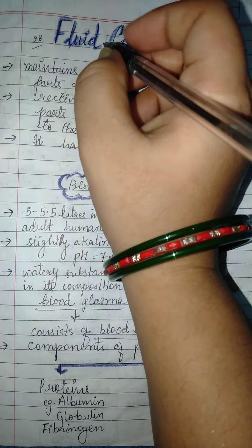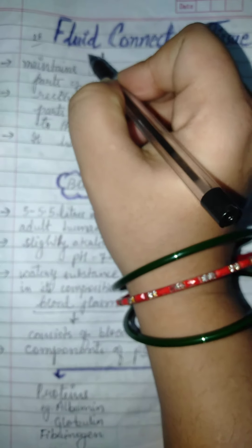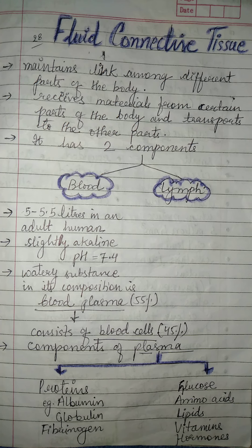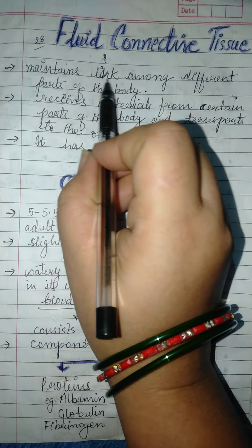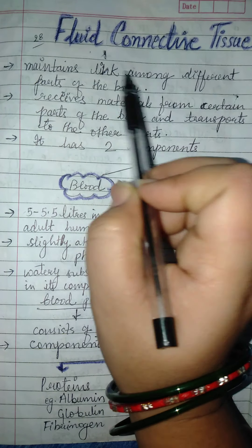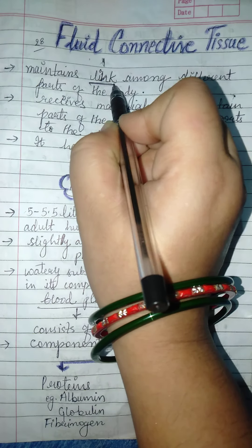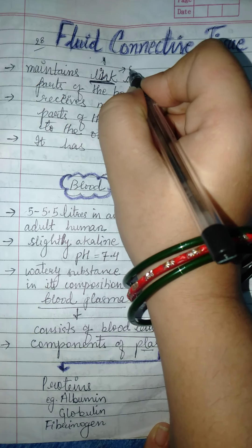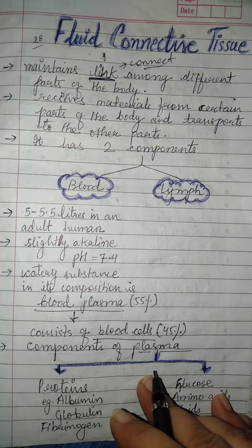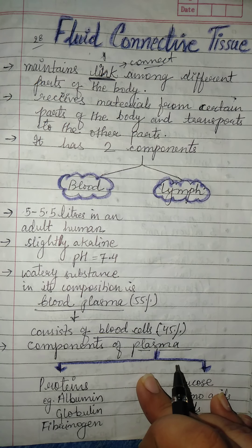If the connective tissue is in the form of liquid, then it will be called fluid connective tissue. Fluid connective tissue is liquefied, meaning it can be circulated to each and every part of the body. This means it will connect and link the parts of the body — that is why it is known as a connective tissue.